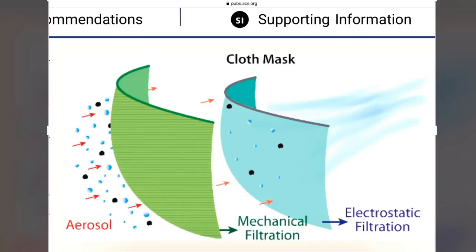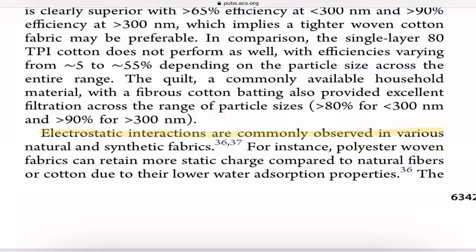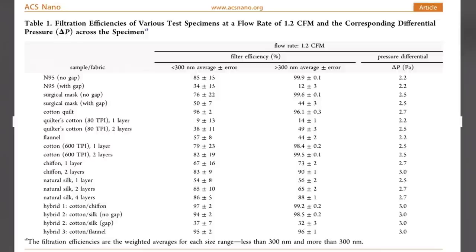This is a really nice illustration published by the study. You can see aerosol moving through a mechanical filter, also known as a physical filter, and then through an electrostatic filter. This is where the hybrids were coming into play. The mechanical filter is usually the high quality cotton, taking out all the larger particles. Then the electrostatic filter is taking out the very small particles under 300 nanometers. The electrostatic filters would include the flannel, the chiffon, or the natural silk. Let me read this quote from the study: "Electrostatic interactions are commonly observed in various natural and synthetic fabrics. For instance, polyester woven fabrics can retain more static charge compared to natural fibers or cotton due to their lower water adsorption properties."